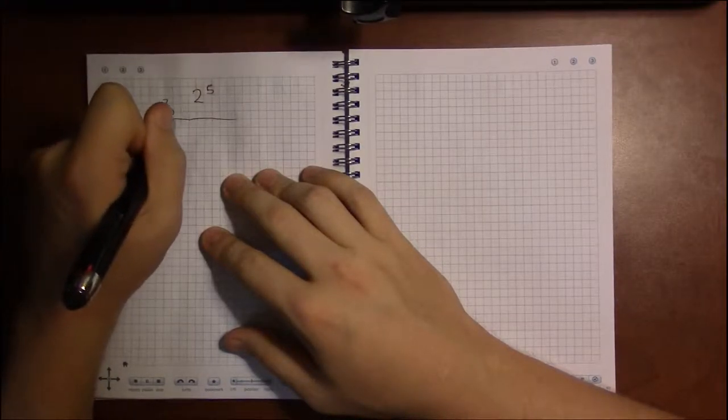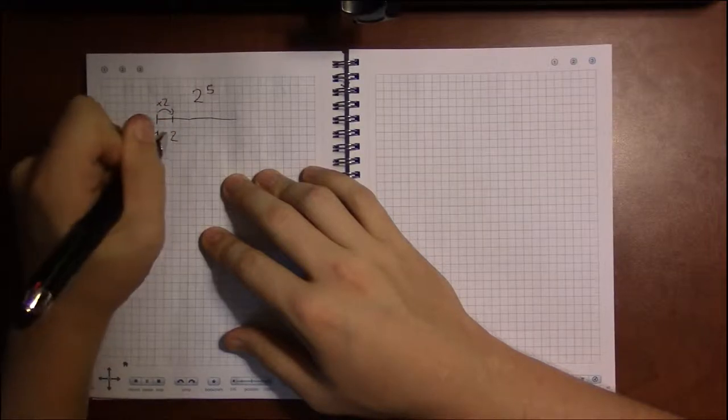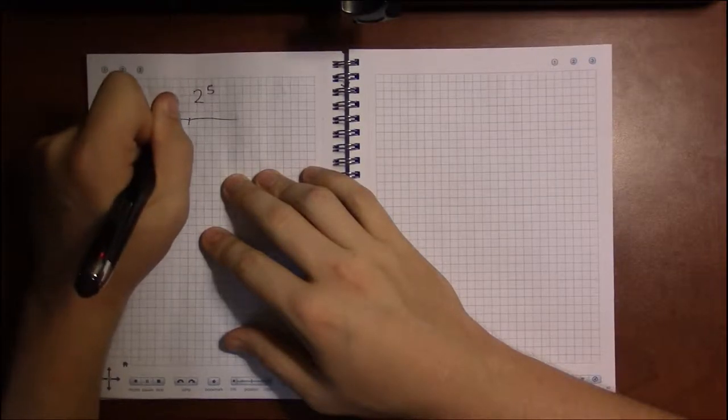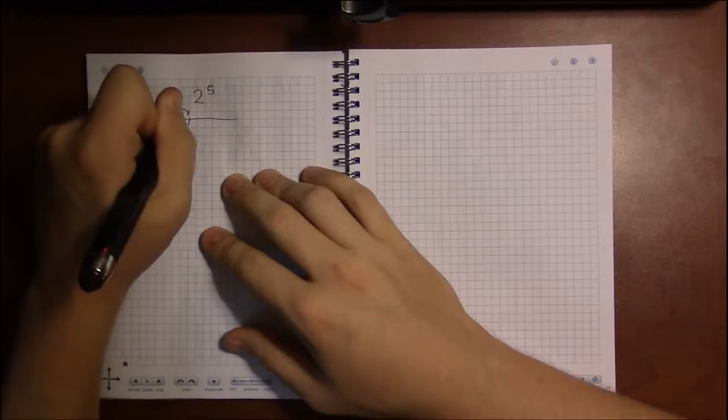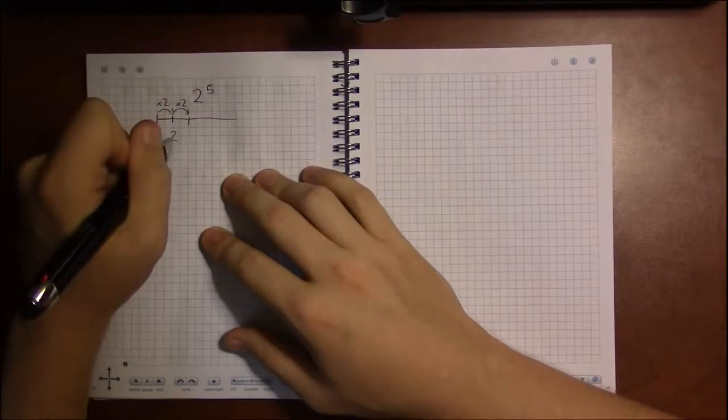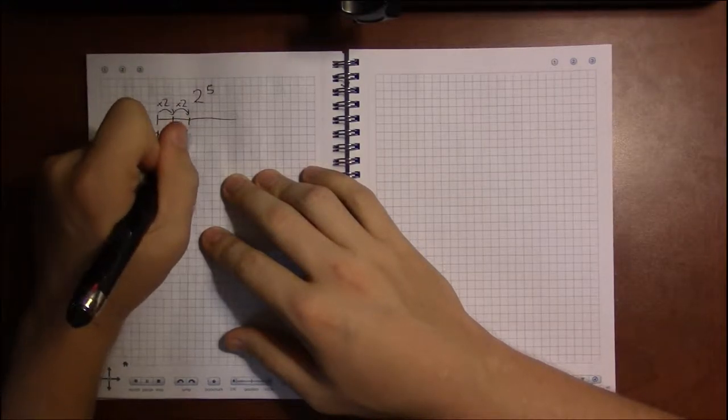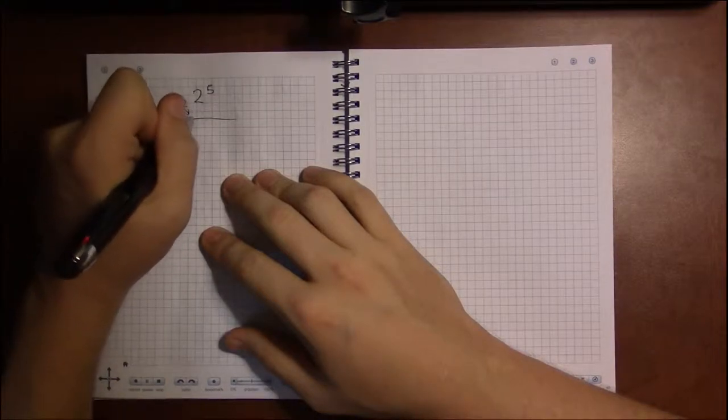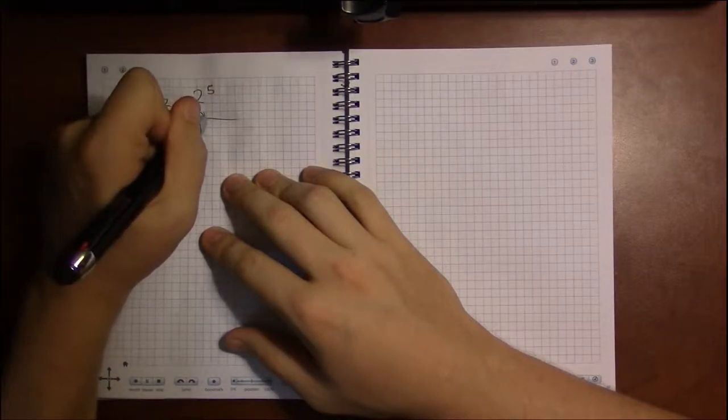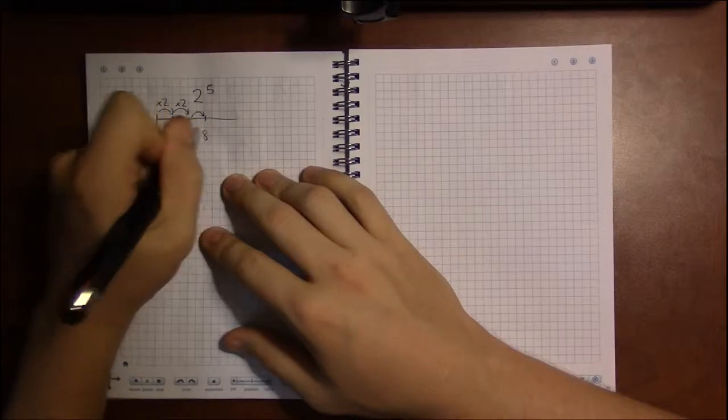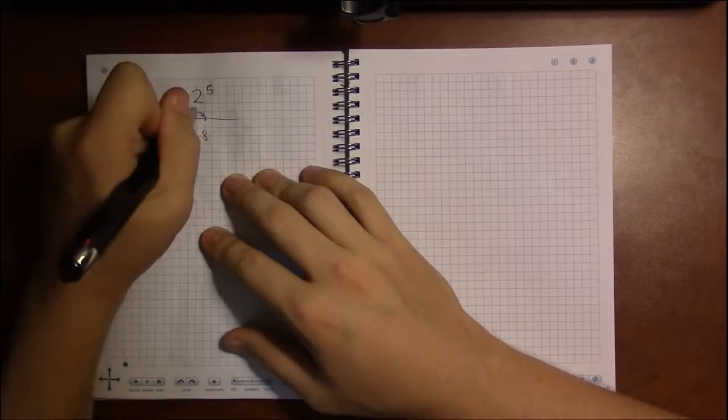And your next step was a times 2. So, you went from 1 to 2, and then your next step was times 2. So, 2 times 2, your next step was 4. Third step would be 4 times 2, which is 8.